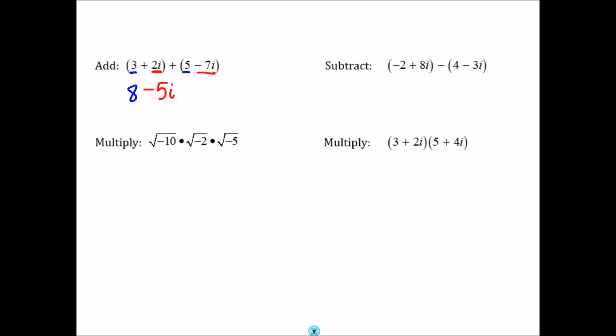We can subtract complex numbers as well. For negative 2 plus 8i minus the quantity 4 minus 3i, the easiest approach is to distribute the negative to the second complex number, so you don't make a sign error. Then combine the real and imaginary parts: negative 2 plus negative 4 is negative 6, and 8i plus 3i is 11i. The final answer is negative 6 plus 11i.